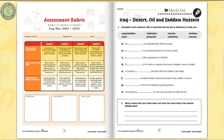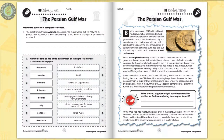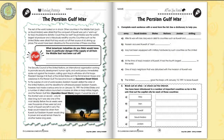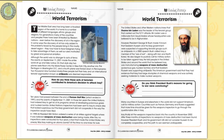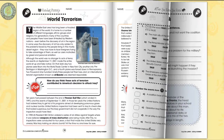Every chapter has a Before You Read section to see what learners already know about the topic, ideal for differentiated learning. Learn the events of the Persian Gulf War and how this led to the war in Iraq. The reading passage is where you'll find all the curriculum content — find out about world terrorism and how the fear of weapons of mass destruction being made in Iraq escalated this conflict.